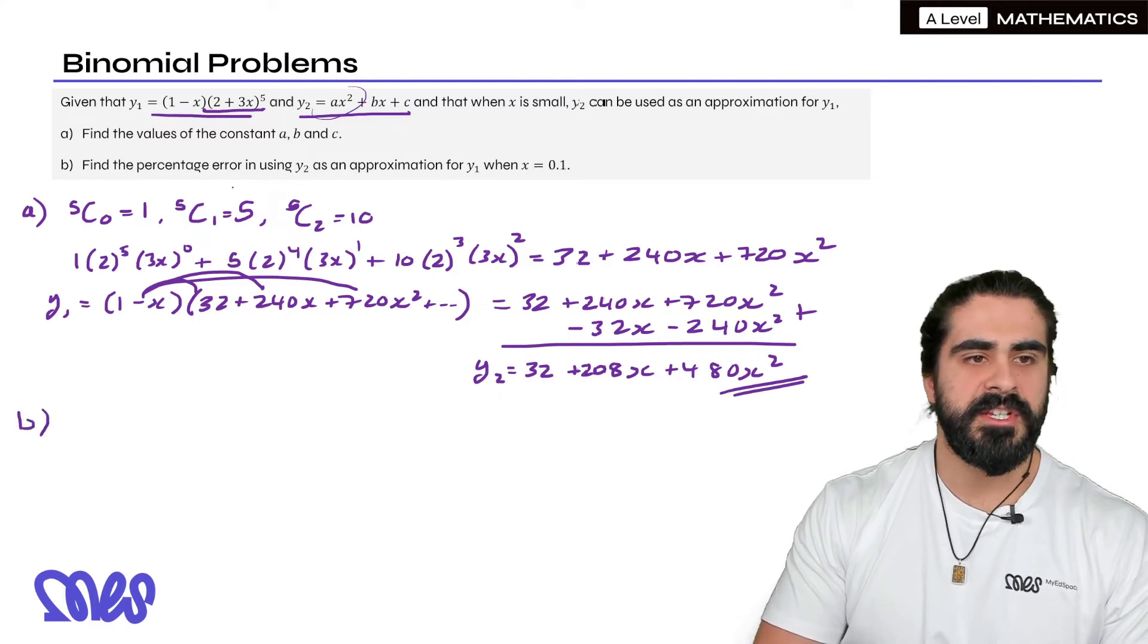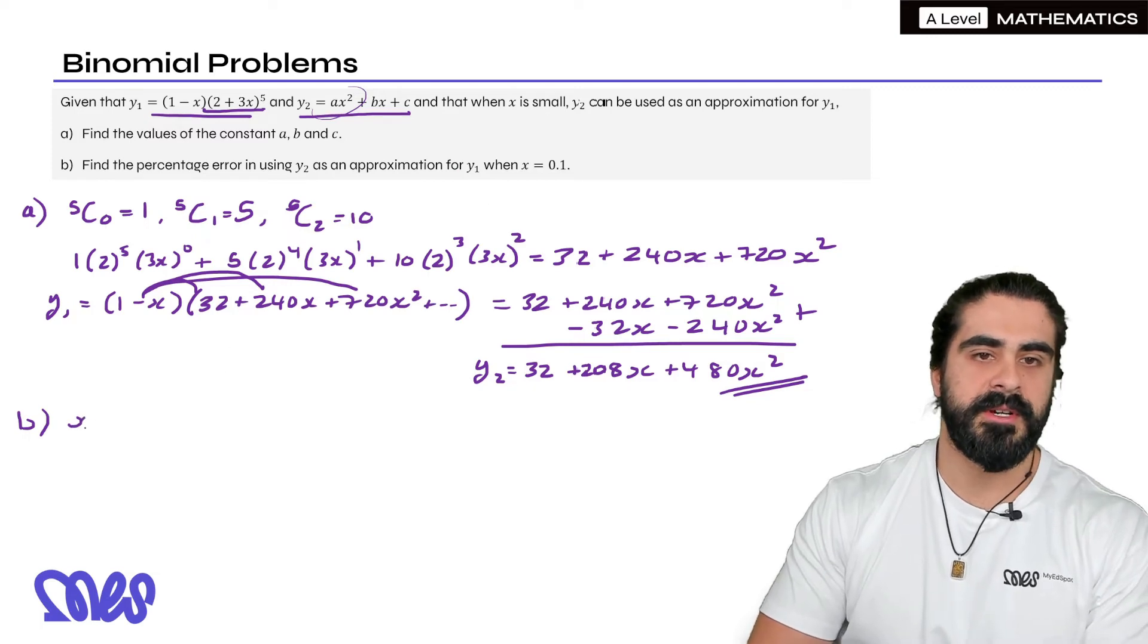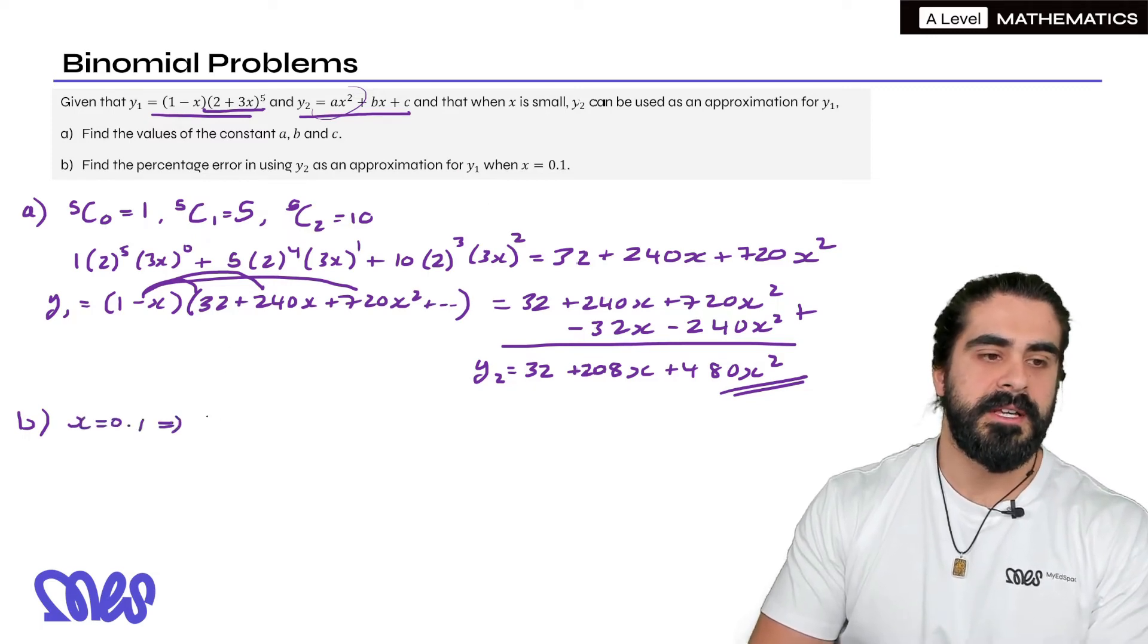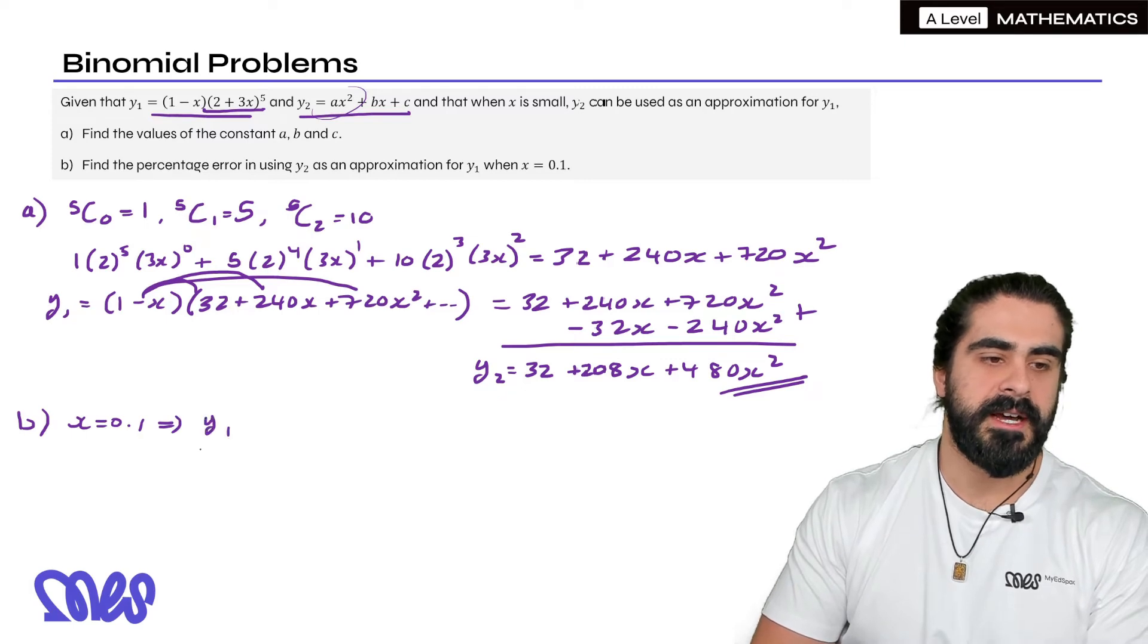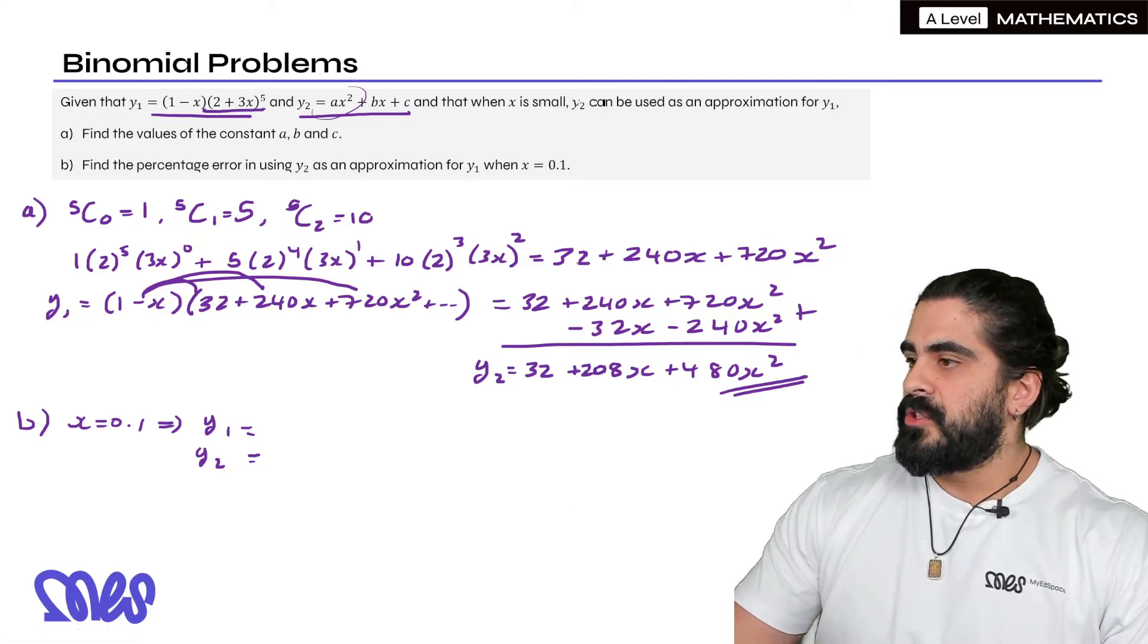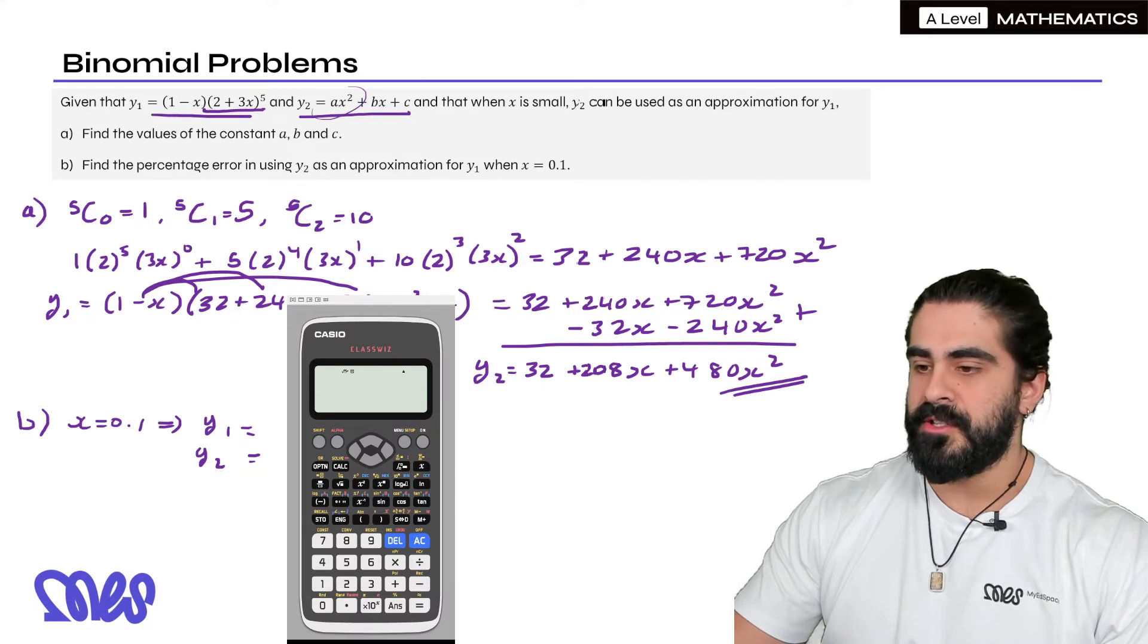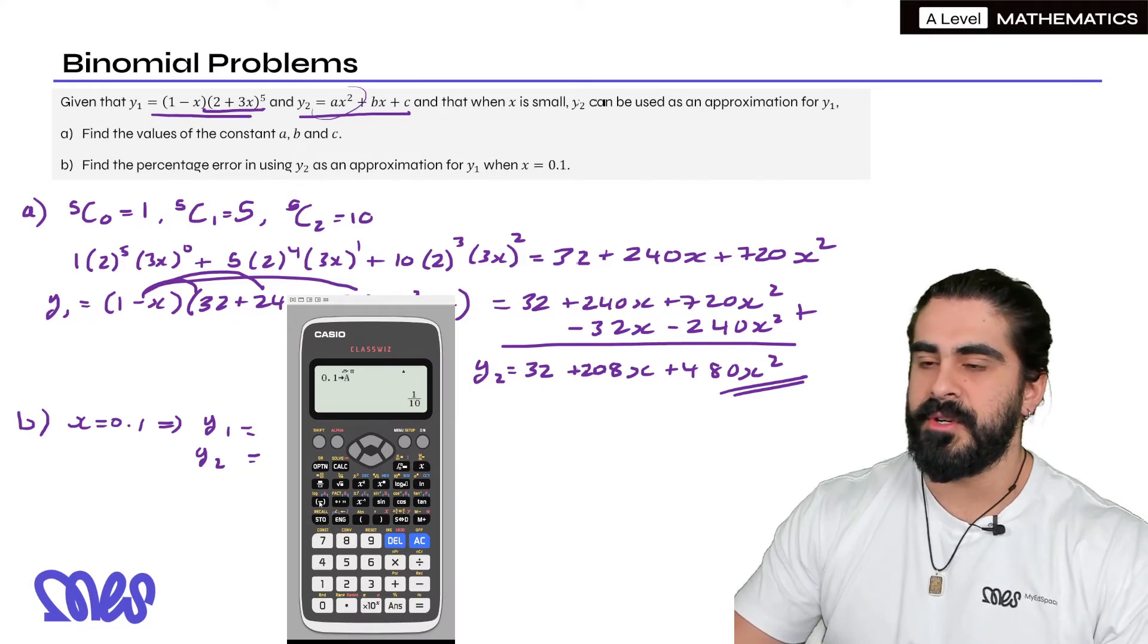Part b, find the percentage error in using y2 as an approximation for y1 when x is 0.1. So we're going to sub in x is 0.1 into y1 and y2. So the easiest way to do this is to store values. So the quickest way to sub in 0.1 is to do 0.1, press this store button and store it as the letter a.